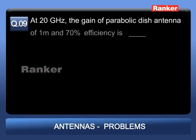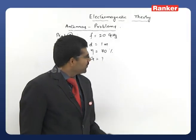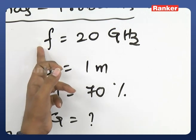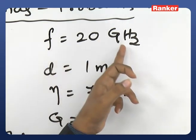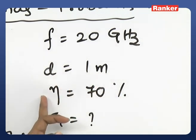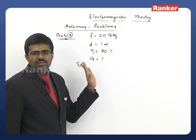Problem 9: At 20 GHz, the gain of a parabolic dish antenna of 1 m diameter and 70% efficiency is: Option A: 15 dB; Option B: 25 dB; Option C: 35 dB; Option D: 45 dB.